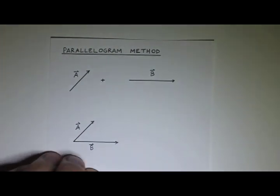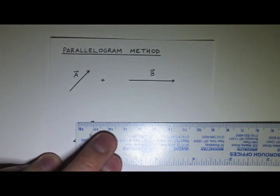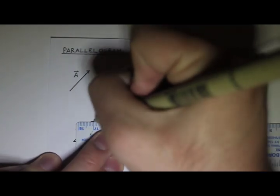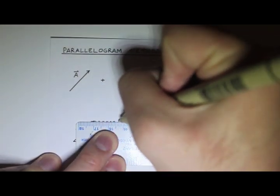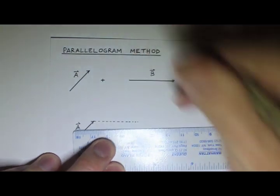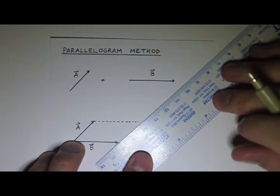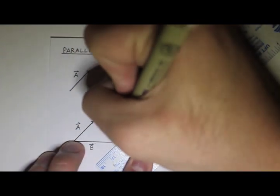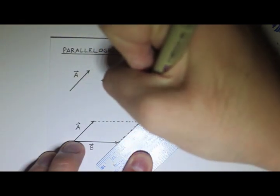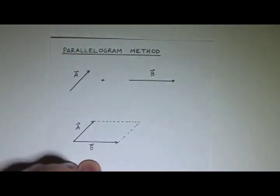Now, you can imagine this forms a parallelogram. In fact, I can kind of draw in the other two sides of the parallelogram here. I have this side up here. I'll draw it in with a dashed line. And then I have this side here, which I'll draw in with a dashed line. And you see it makes a parallelogram.